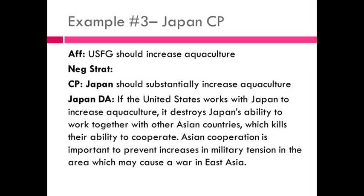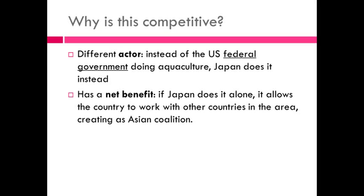Here's the last example: the Japan counter plan. The affirmative is the USFG should increase aquaculture. The counter plan is that Japan should substantially increase aquaculture. The net benefit is a Japan DA: if the US works with Japan to increase aquaculture, it destroys Japan's ability to work with other Asian countries, which kills their ability to cooperate regionally. Asian cooperation is important to prevent increases in military tension, which may cause a war in East Asia. So if Japan does it alone, it increases Asian cooperation and solves the risk of an East Asian war. It's competitive because it has a different actor — Japan instead of the US federal government — and it has a net benefit: Japan working alone allows it to form an Asian coalition.